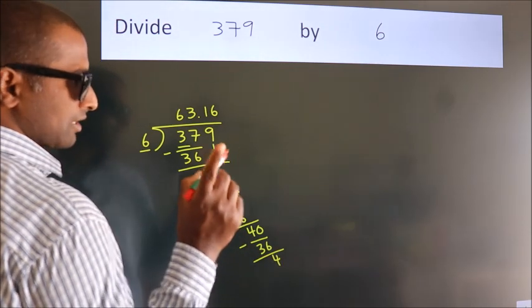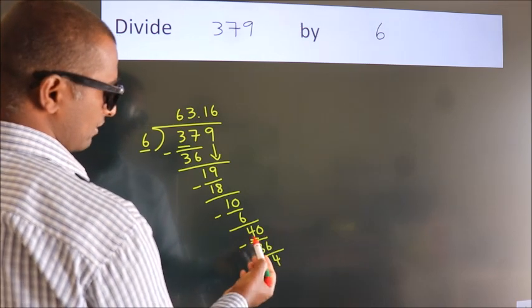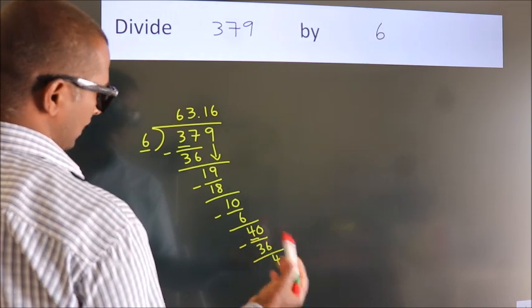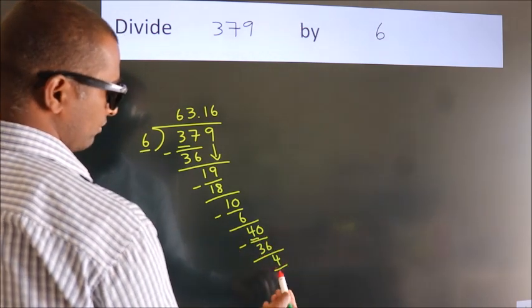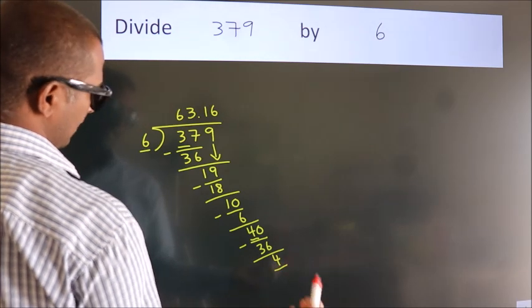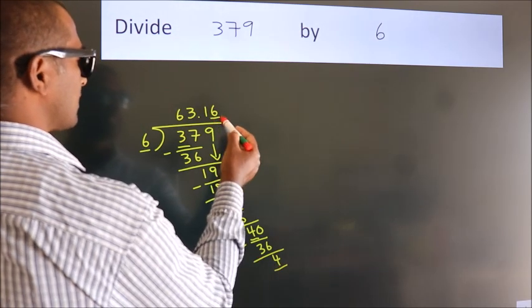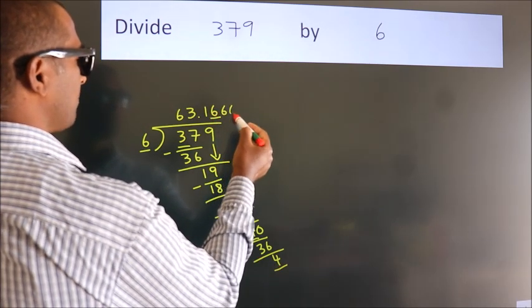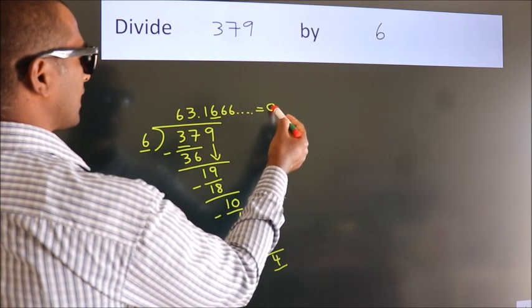Now you observe. We had 4 here and we got 4 again. That means this number keeps on repeating. So this is our quotient.